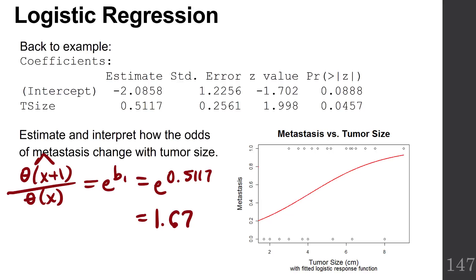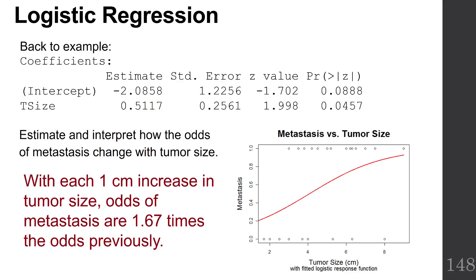How do we interpret this? That means the odds of metastasis to the lymph nodes at the next tumor size are 1.67 times the odds at the previous tumor size. So with each one centimeter increase in tumor size, the odds of metastasis are 1.67 times the odds previously. Notice that this is a ratio. Remember, it was a ratio of odds.